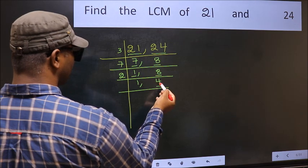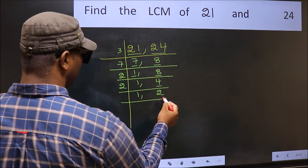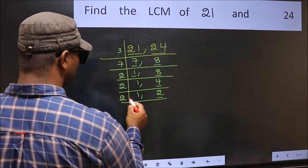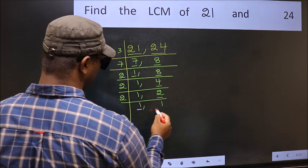Now we have 4. 4 is 2 times 2 equals 4. Now we have 2. 2 is a prime number, so 2 times 1 is 2. So we got 1 in both the places.